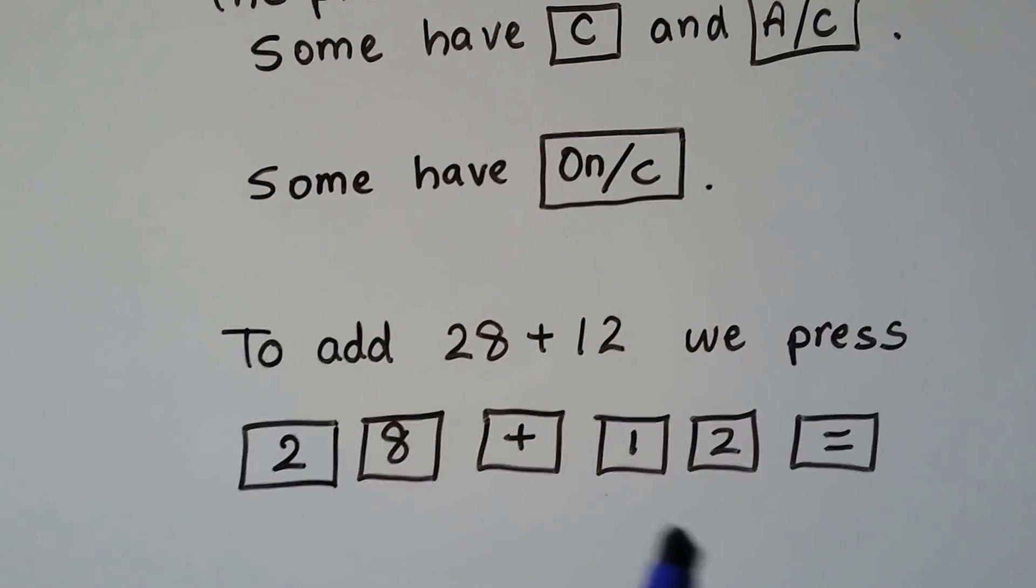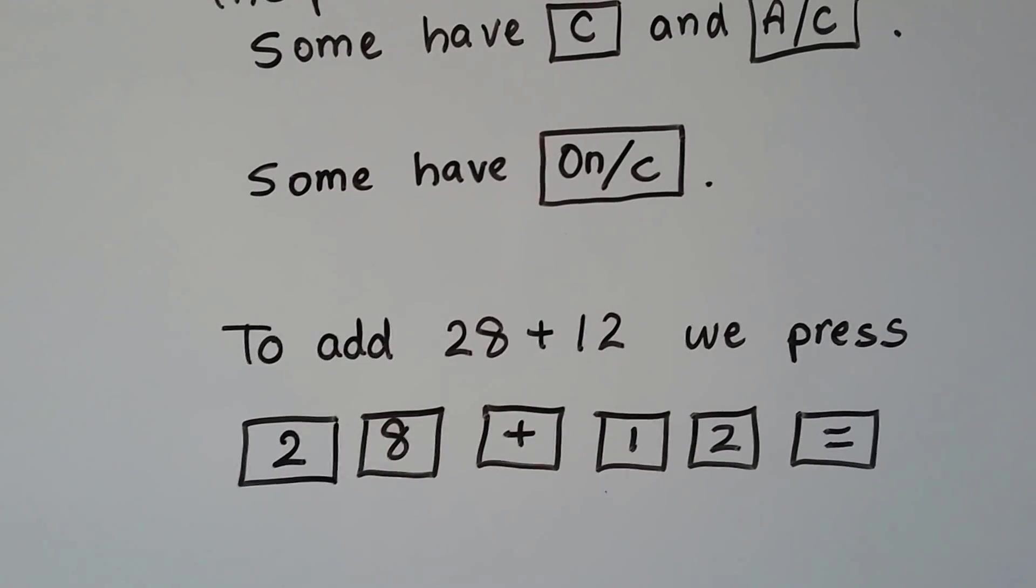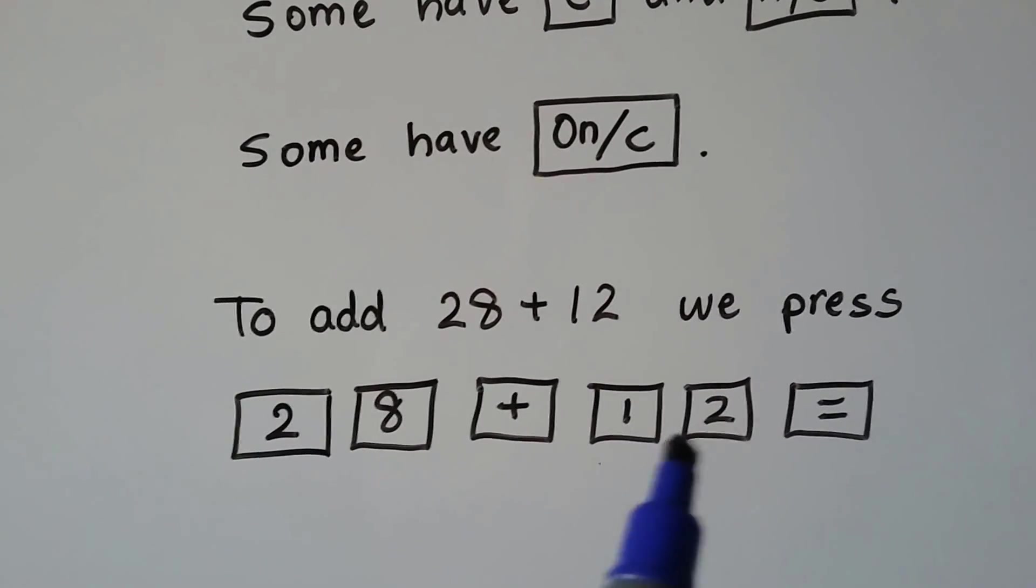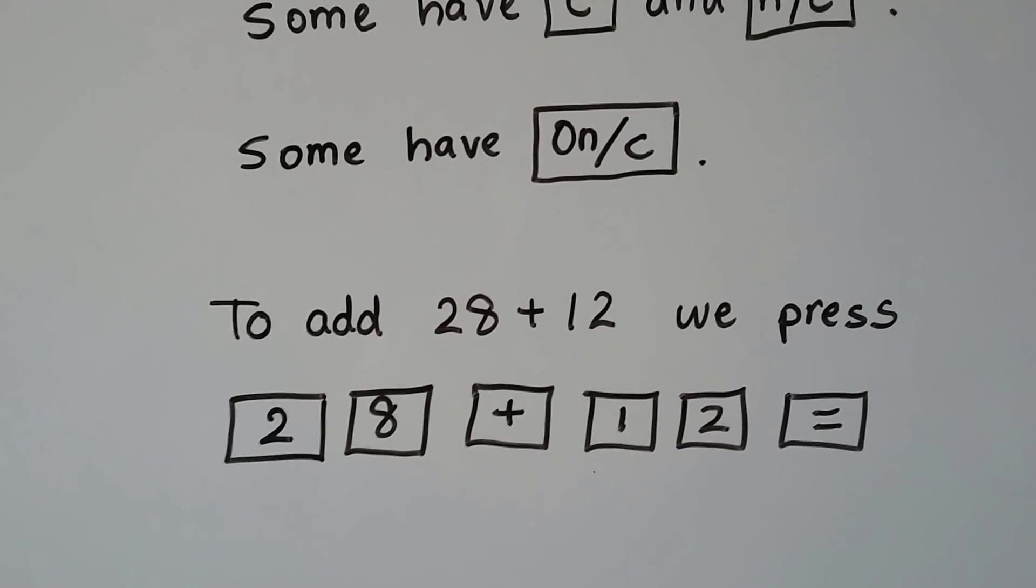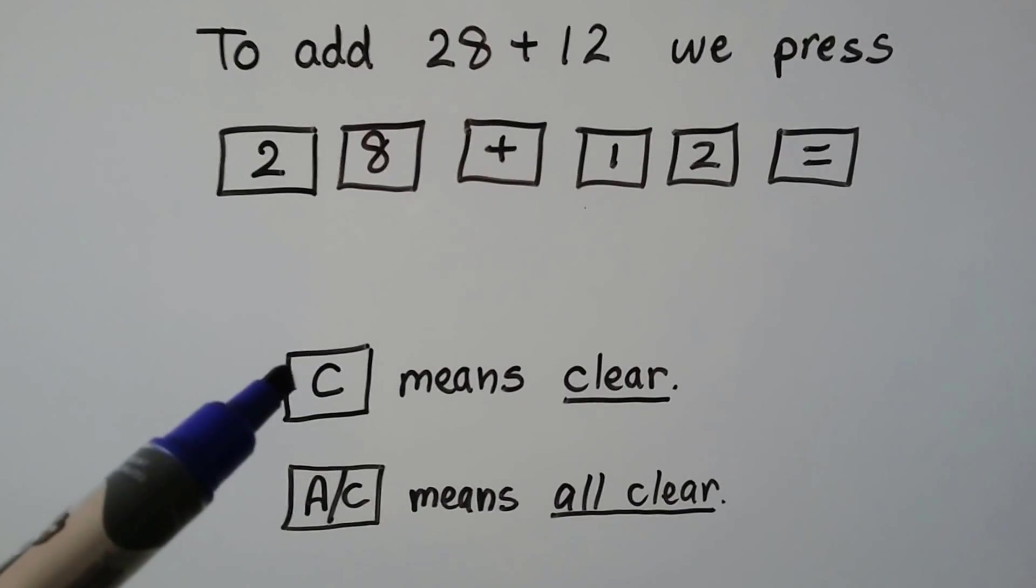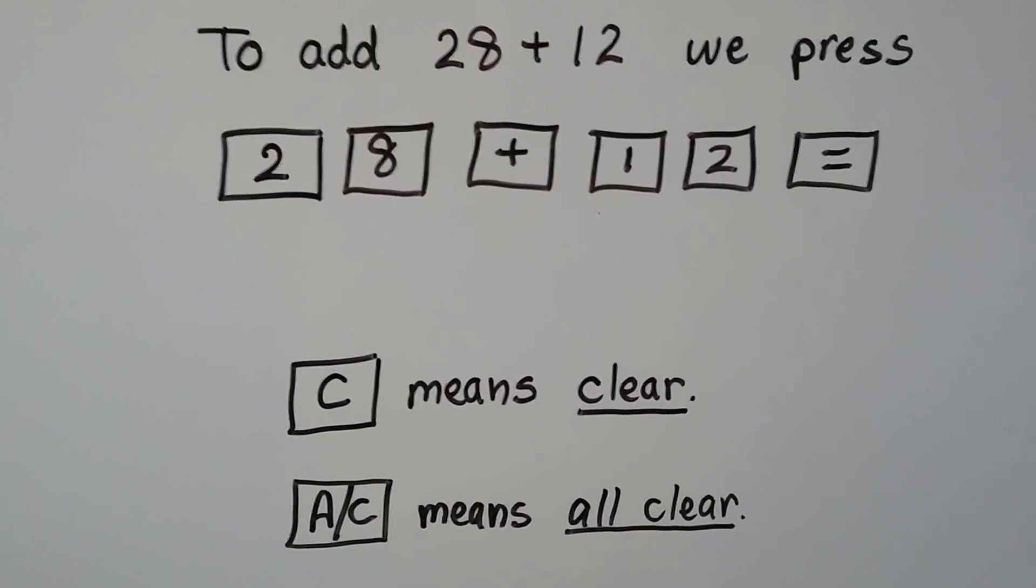Then a 1, then a 2, and then the equal sign. That way we'll have a 28 plus a 12. When we hit the equal sign, the screen will show us the answer. So just remember C means clear and the AC means all clear.